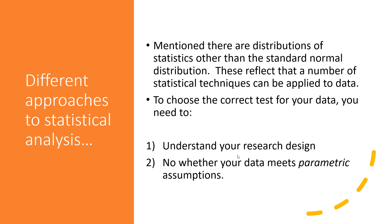There are lots of different distributions of statistics, reflecting the many different statistical techniques you can apply. To choose between them you need to understand your research design and whether your data meets the parametric assumptions. A research design is the framework of methods and procedures adopted to answer research questions or test hypotheses. In relation to analysis, we tend to break research designs into different types: between groups designs, within groups designs, mixed between-within groups designs, and cross-sectional or correlational designs.